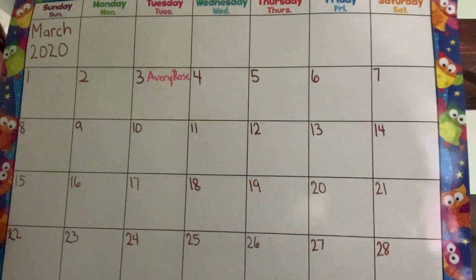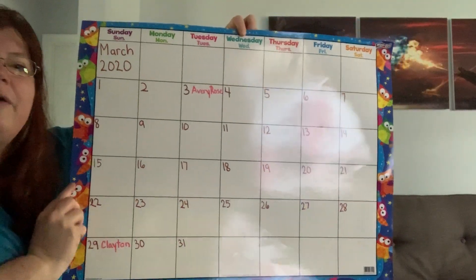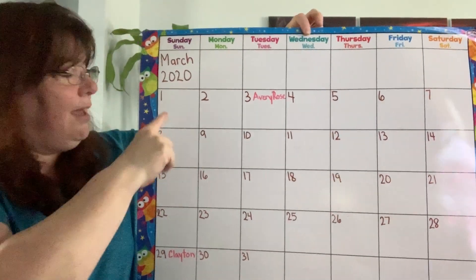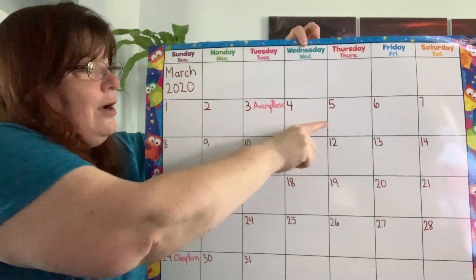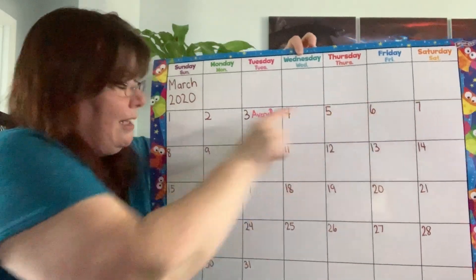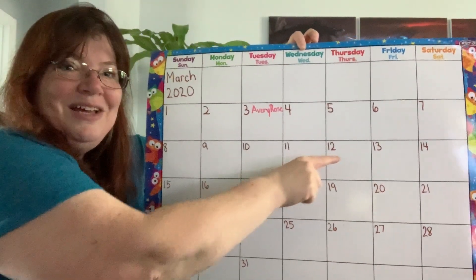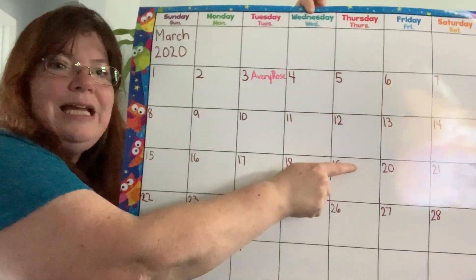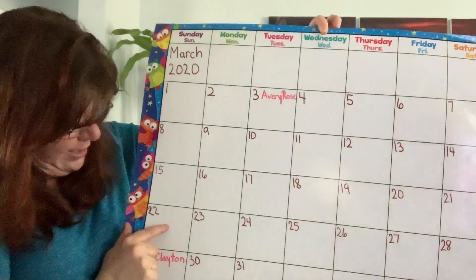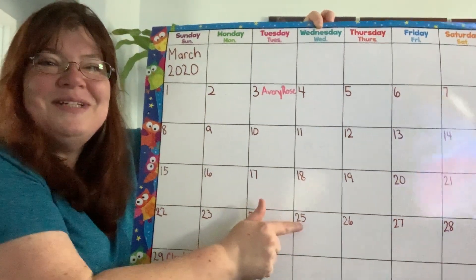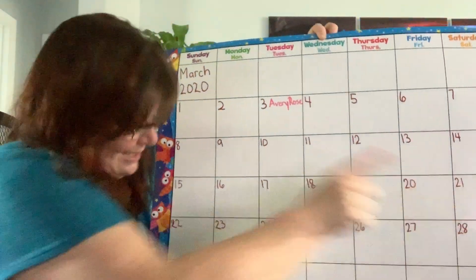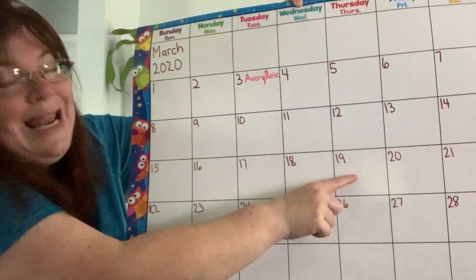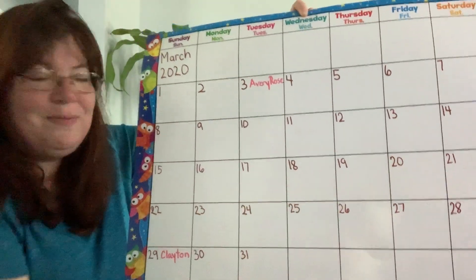Here is our March calendar. I brought it from the classroom so we could all share it at home. Get your counting finger out — your pointy finger. Count with me: 1, 2, 3, 4, 5, 6, 7, 8, 9, 10, 11, 12, 13, 14, 15, 16, 17, 18, 19, 20, 21, 22, 23, 24, 25, 26, 27, 28, 29, 30, and 31. There are 31 days in March, and today is March 19th. It is the 19th day of March. Good job, guys.